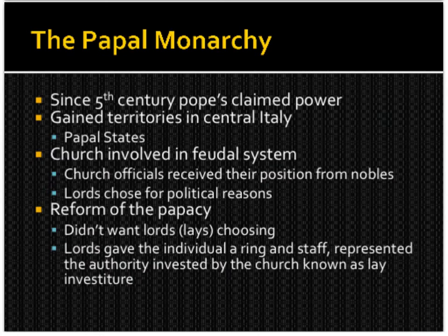Let's talk about the papal monarchy. Since the 5th century, popes have been claiming power in Italy and gained territories in central Italy known as the Papal States. The church was involved in the feudal system — kings, lords, knights, and serfs — and church officials received their positions from nobles outside the church. Lords were chosen for political reasons, not necessarily the best person for the job. There was a call for reform of the papacy; the practice was known as lay investiture, where a lord would give an individual a ring and staff representing the authority invested by the church.